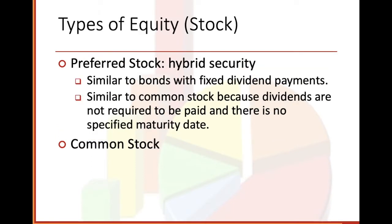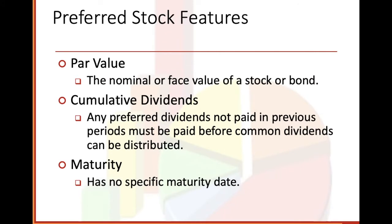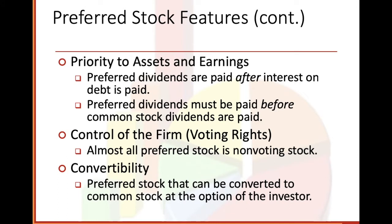Preferred stock is a hybrid security, similar to bonds with fixed dividend payments, and similar to common stock because dividends are not required to be paid and there is no specific maturity date. Preferred stock features include par value — the nominal or face value of a stock or bond — and cumulative dividends. Any preferred dividends not paid in previous periods must be paid before common dividends can be distributed. Maturity has no specific maturity date. Priority to assets and earnings: preferred dividends are paid after interest on debt is paid, and preferred dividends must be paid before common stock dividends are paid. Control of the firm and voting rights: almost all preferred stock is non-voting.